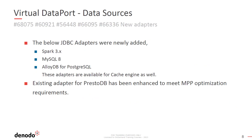With this update, some new adapters were added to the existing list of JDBC adapters: Spark 3, MySQL 8, and AlloyDB for PostgreSQL. The existing adapter for PrestoDB has also been enhanced to meet MPP optimization requirements. These adapters can be used for the cache engine as well.